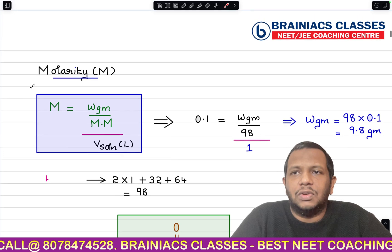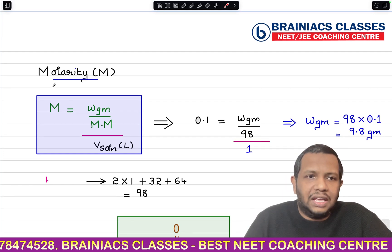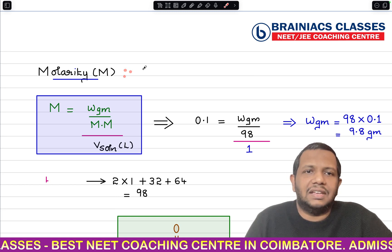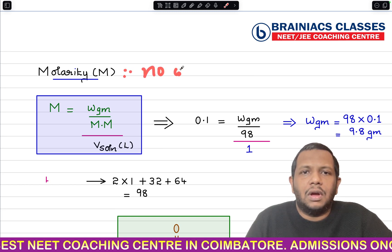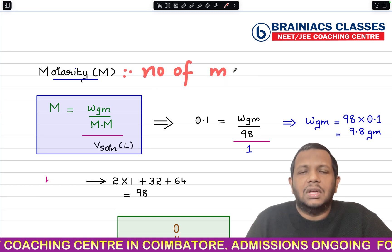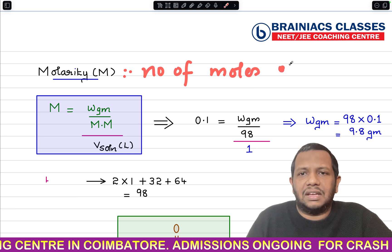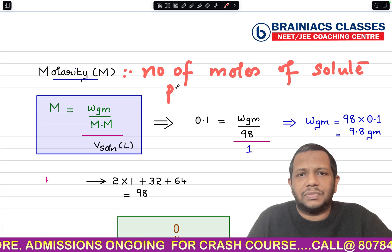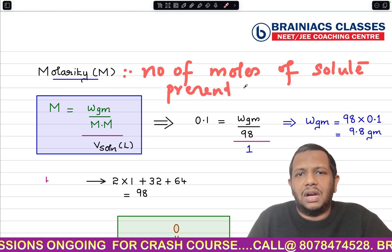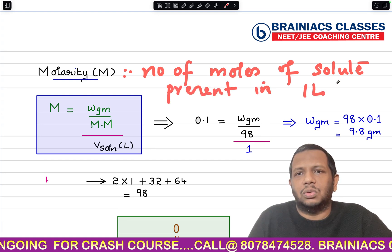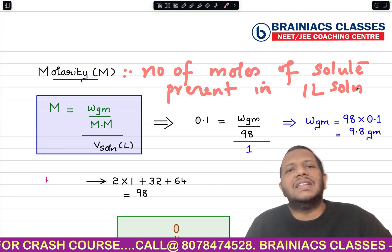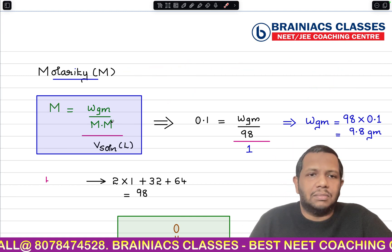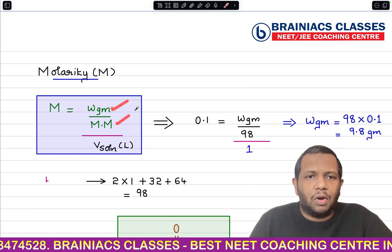Since the question is about molarity, we need to know what molarity is and its formula. Molarity indicates the number of moles of solute present in one liter of solution. The formula for molarity is: molarity = weight in grams divided by molar mass — that is, the number of moles of solute — divided by volume of solution in liters.